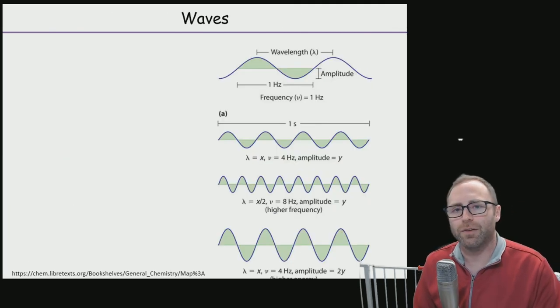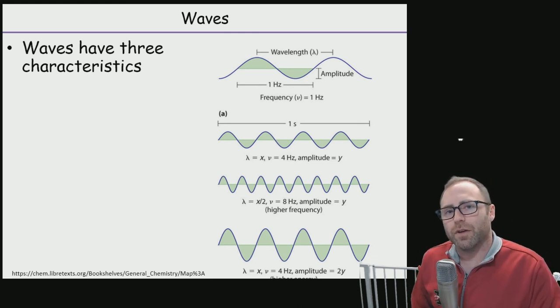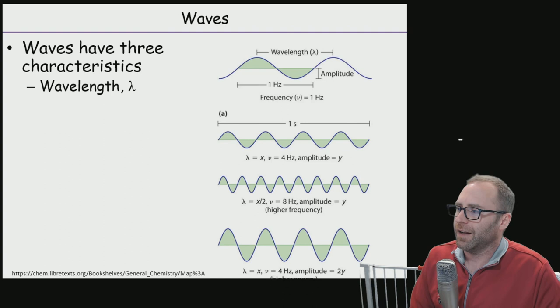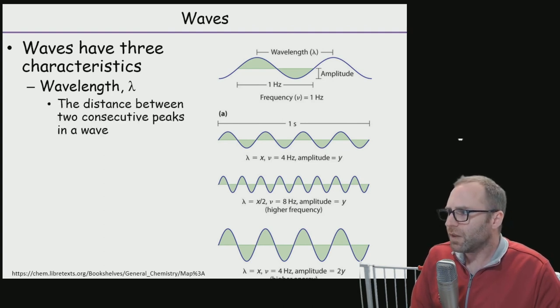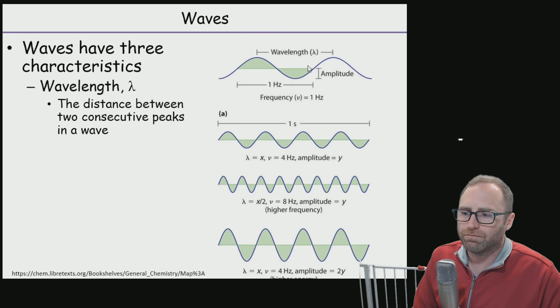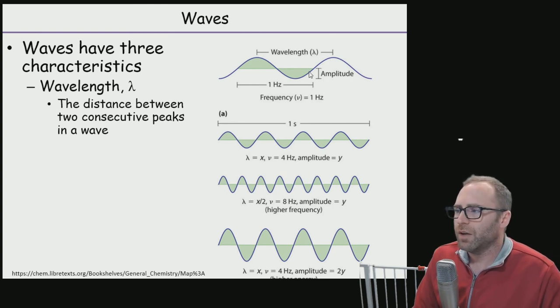Let's talk about some of the properties of waves. There's three main characteristics that we're going to be focused on with waves. The first one is wavelength, and we're going to give it that Greek symbol lambda. Lambda, our wavelength, is going to be defined as the distance between two consecutive peaks. So here on the illustration, we've got this peak, this trough, this peak, this trough. The distance between two peaks, that's what we're going to call our wavelength.